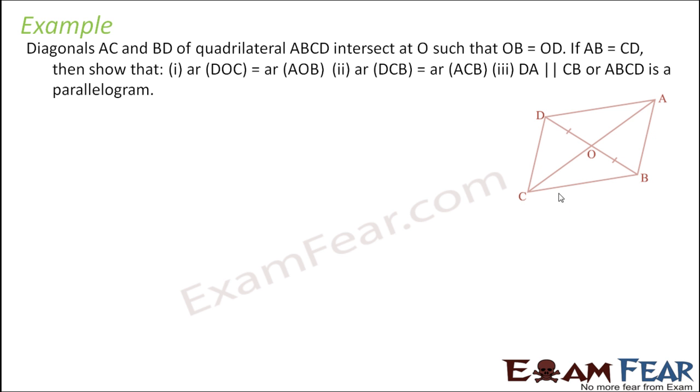Diagonals AC and BD of quadrilateral ABCD intersect at O such that OB is equal to OD and AB is equal to CD. We have to show that area of DOC is equal to area of AOB, area of DCB is equal to area of ACB, and DA is equal to CB or ABCD is a parallelogram.